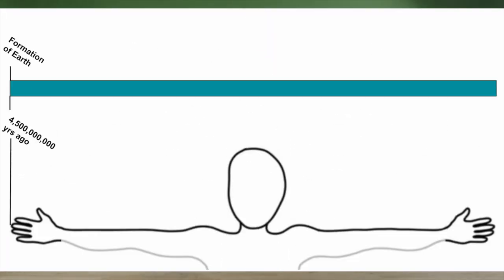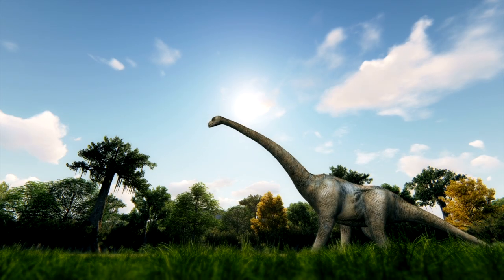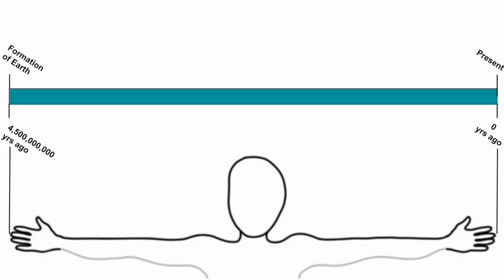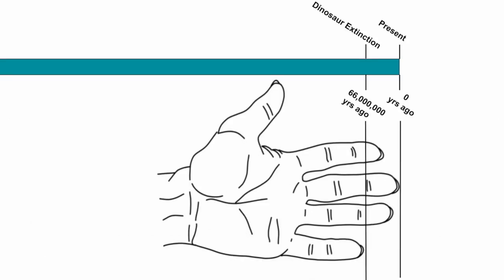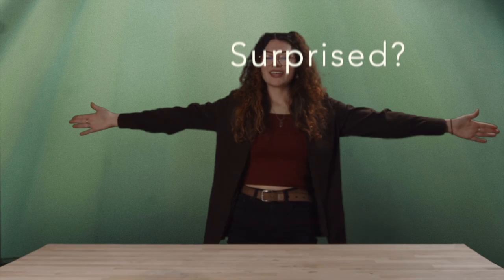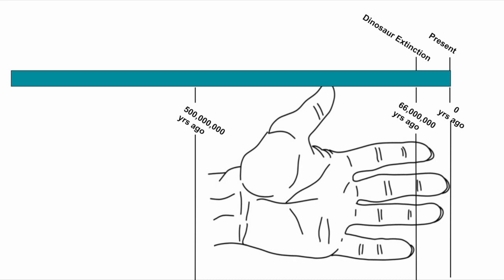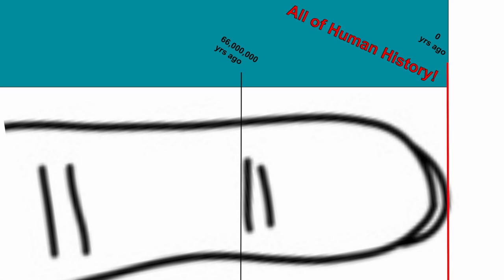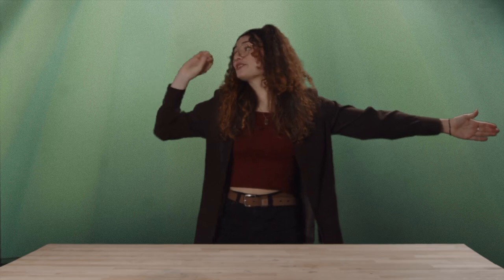Stretch your arms out wide, and imagine if the entire history of earth, from its formation to now, were represented by the length of your arms. Dinosaurs roamed the earth about 66 million years ago — that would actually be right here, the edge of my finger knuckle. And if you asked when humans came into the picture, we'd be just a tiny speck at the very end. If I filed my fingernails, all of humankind's history would vanish. So when we talk about deep time, we're talking about billions of years — time on a scale that's hard for our human brains to grasp. But that's what makes Earth's story so incredible.